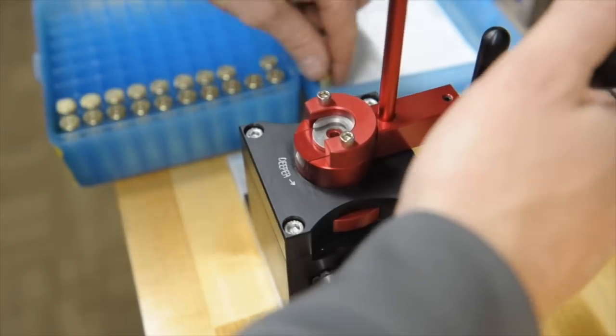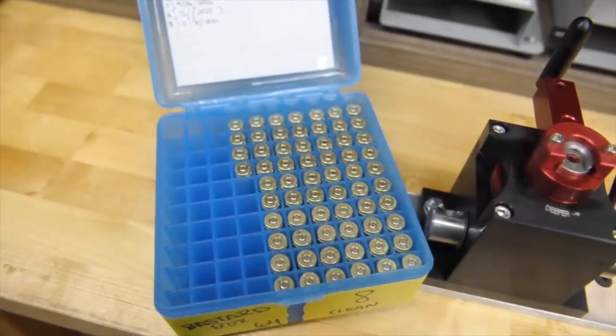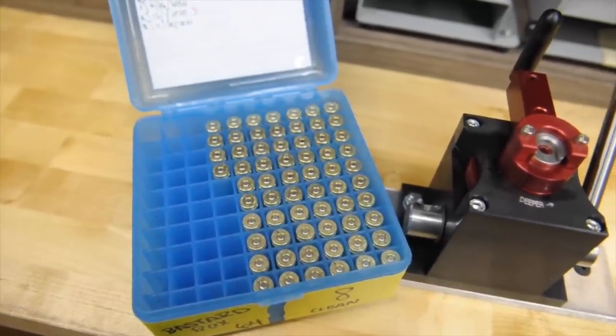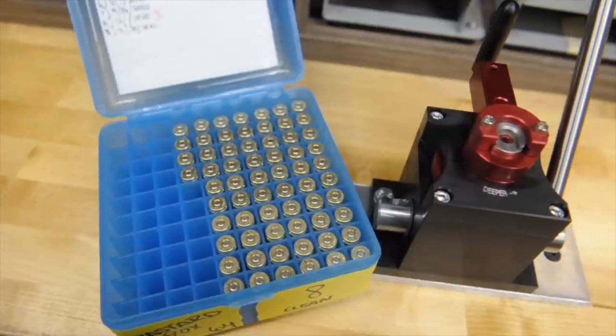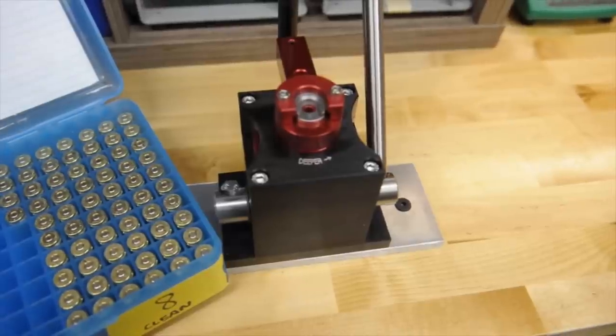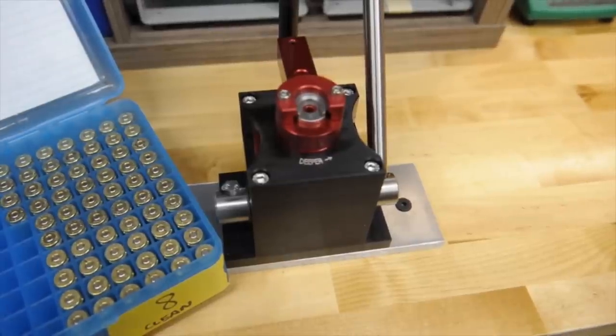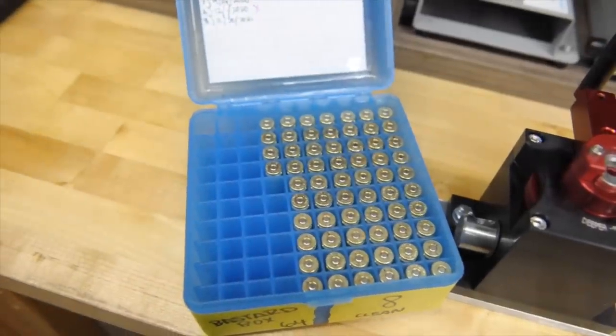So there you go. Couple minutes on the CPS and you have all your brass primed. I can do about 100 in about 5 minutes with this tool. Guys say that the hand primer is just as fast, but I like nice stuff. Sucker for billet. Buy whatever fits your budget.